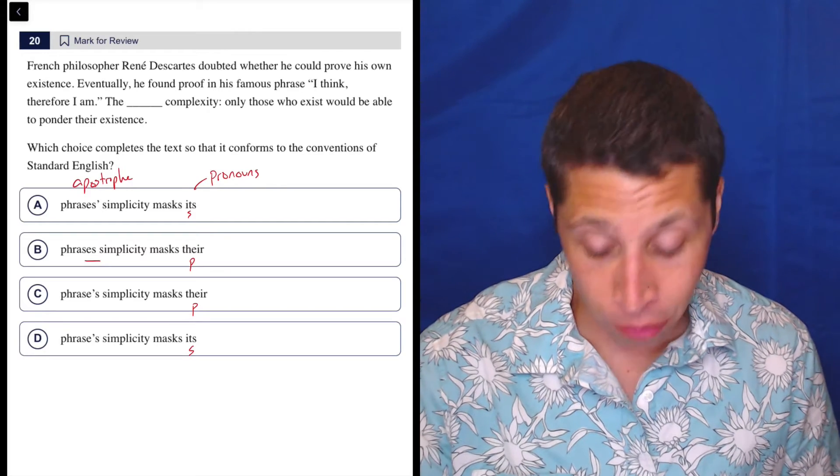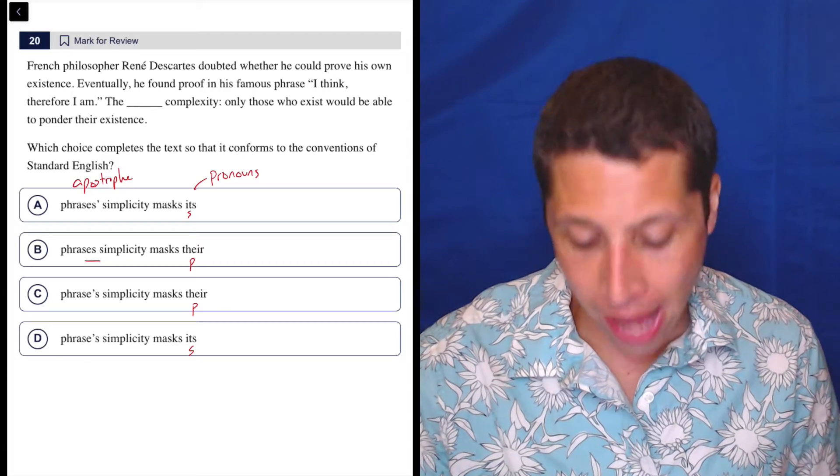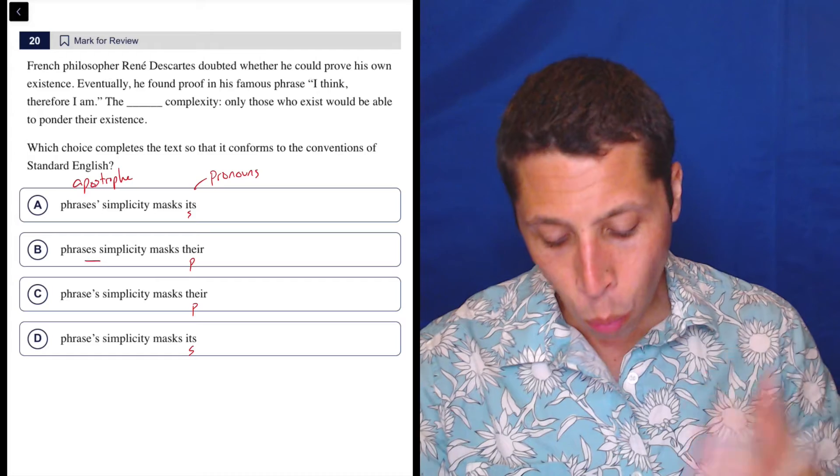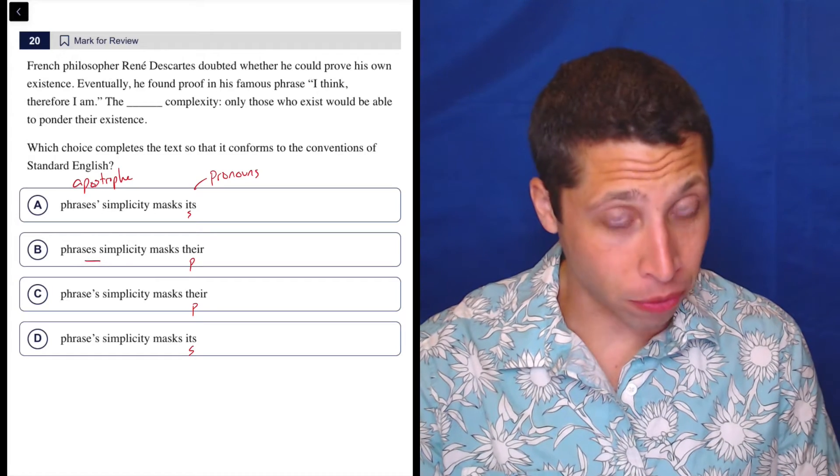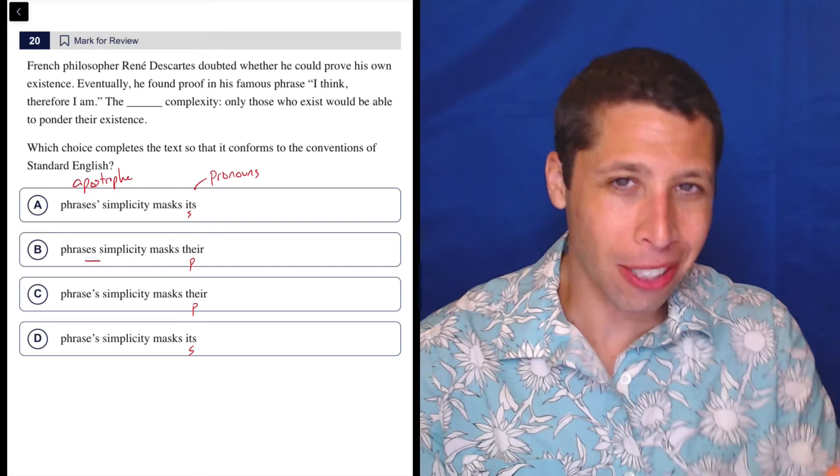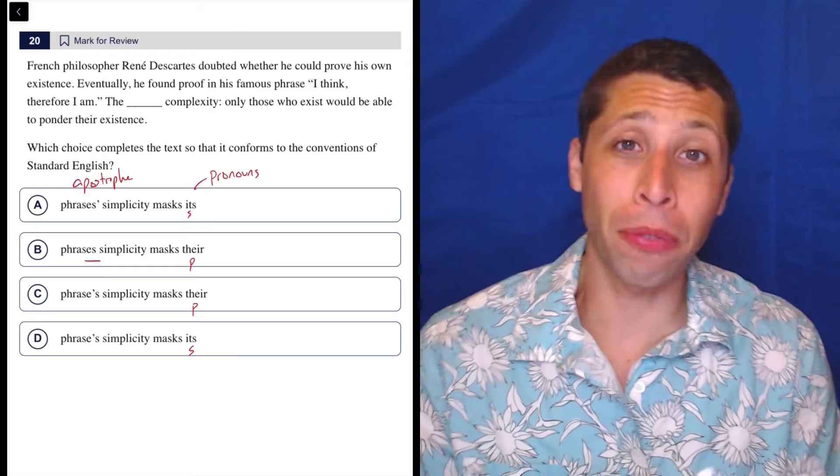Here we can look at even just that very short part. The phrase's simplicity masks there its complexity. We need to have an apostrophe because the simplicity belongs to the phrase. Now, it's not a physical thing that we can hold in the way we think of possession, but neither is a phrase.